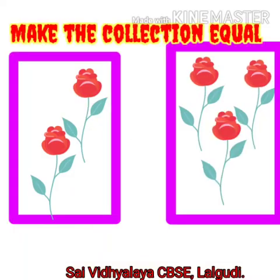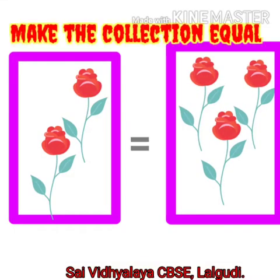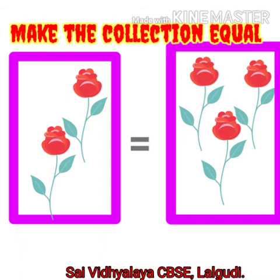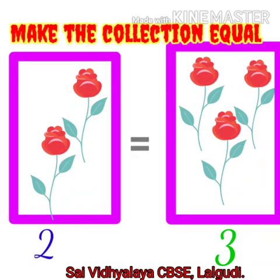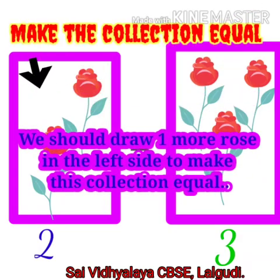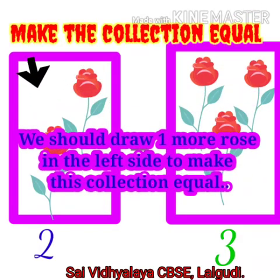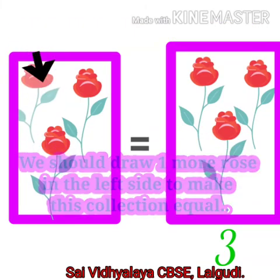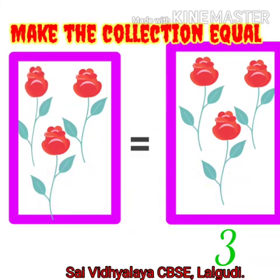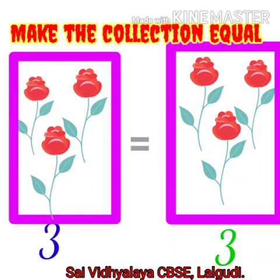See the next example. Here we have three roses on the right side and two roses in the left side. What should we do to make this collection equal? Yes, we should draw one more rose in the left side to make this collection equal. Now we have three roses on both the sides. Now the collection is equal.